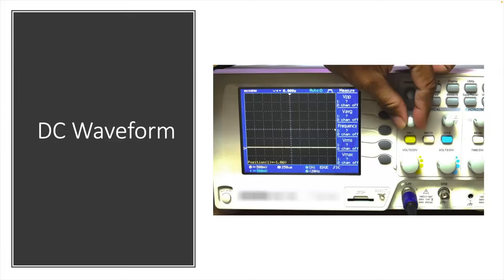A DC waveform is very simple. You can see this on an oscilloscope because it does not oscillate — it's constant. It is also polarized, whereas an AC waveform is constantly swinging positive and negative 60 times a second. A DC waveform has a positive and a negative polarity. Whenever you see these waveforms, understand that it is constant and does not change at all. So if we're looking at 24 volts, the waveform will be at 24 volts and it'll just be constant.